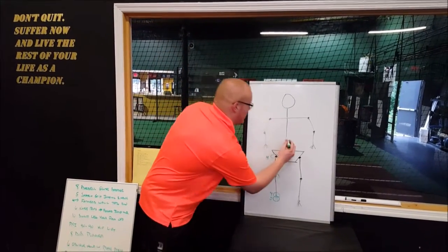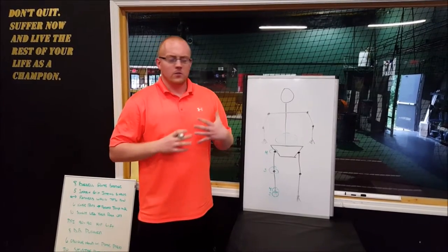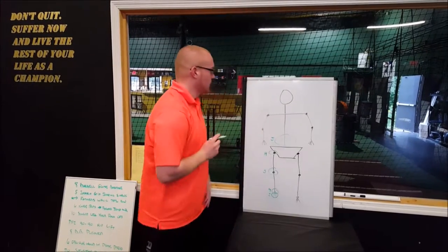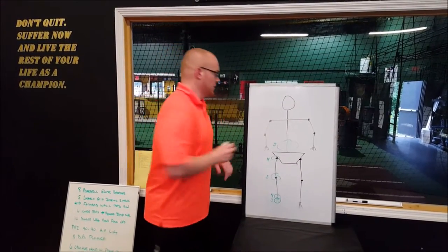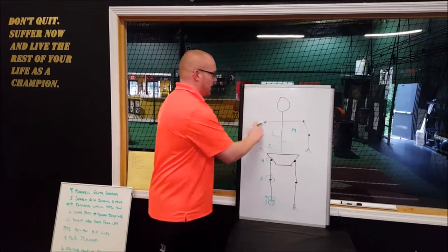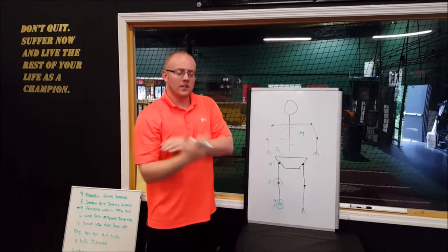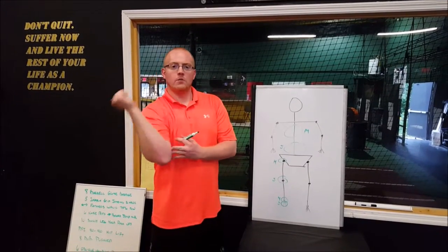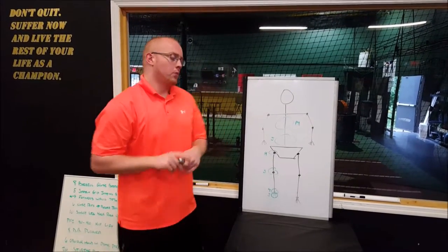The low back — the lumbar spine — we hear a lot about core stability, so naturally you need to be stable there and prevent excessive movement. Your upper back needs to be able to rotate, extend, and bend freely — it needs to be mobile. Your shoulder blades need to be stable, your shoulders need a lot of mobility, your elbows need stability — you don't want your elbow going every which way like a baseball player cocking back — and your hand and wrist need to be mobile.